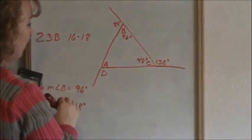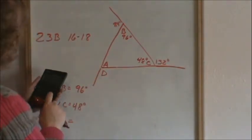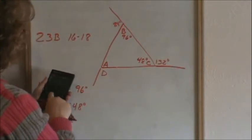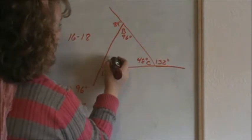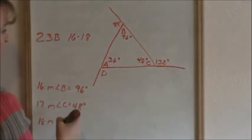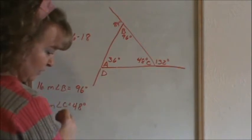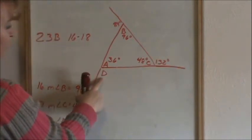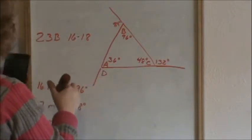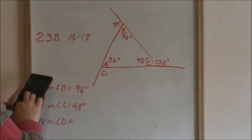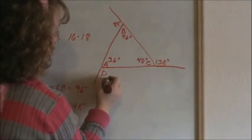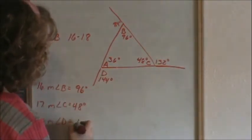So we can figure out angle A. Adding our 96 and 48 and then subtracting from 180 leaves 36 degrees. So we now know angle A is 36 degrees. So now can we figure out angle D? Yes, because those two angles are supplementary. Subtracting the 36 from 180, that leaves 144 for angle D.